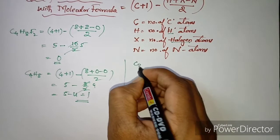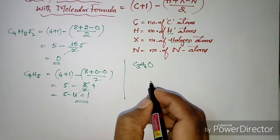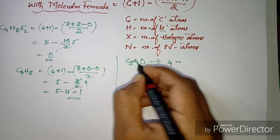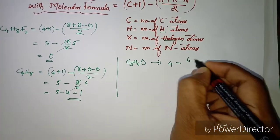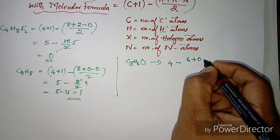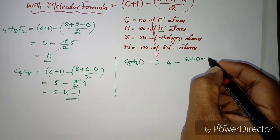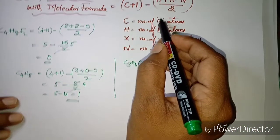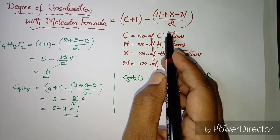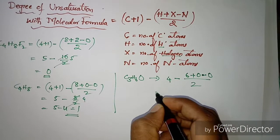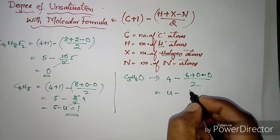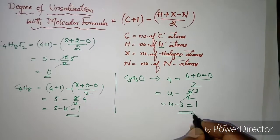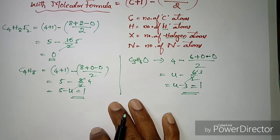Now in case you have a molecular formula like C3H6O, what happens? C + 1 = 4. Minus H, which is 6. Plus no halogens, zero. Minus no nitrogens. The formula is designed so that there is no effect of the presence of oxygen. Total equals (4 − 6) / 2, that is four minus three, which equals one.